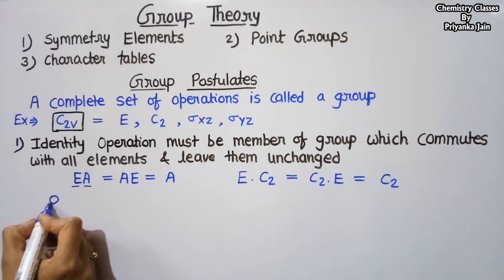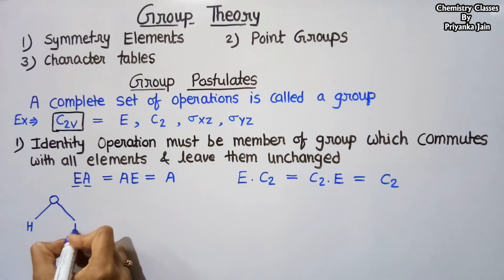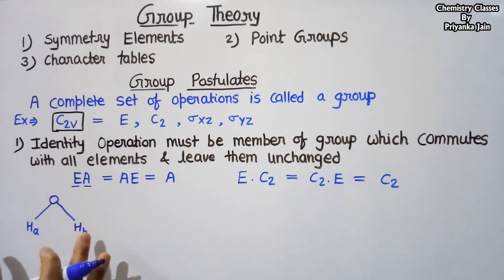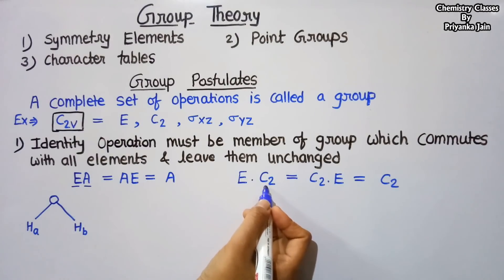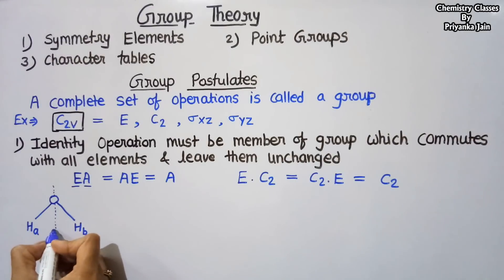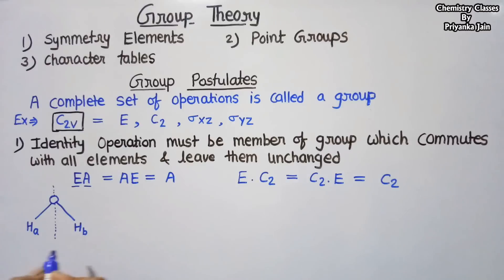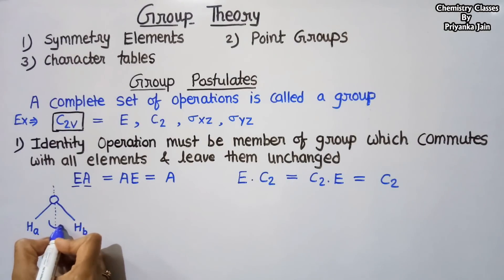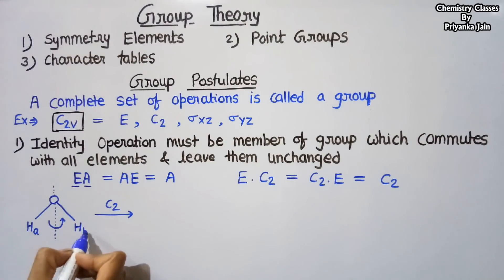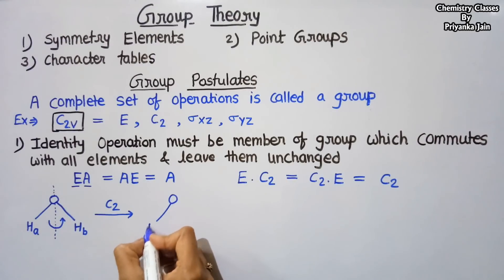Here is the oxygen with two hydrogens attached — we denote them HA and HB so we can identify between them. Firstly we apply the C2 axis, which goes vertically through the oxygen atom along the z-axis. If we rotate the molecule about this axis by 180 degrees, HA will come to the HB position and HB will go to the HA position, giving us the swapped structure.